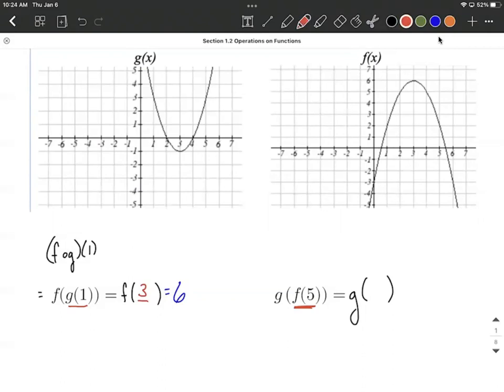So f of five, we're going to use f's graph on the right hand side. And when we input a five in for an x value, we want to identify this point on our graph and say f of five is going to give you a y value of two. So that goes inside the set of parentheses.